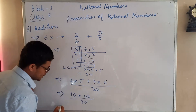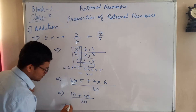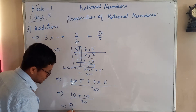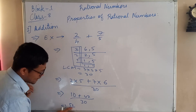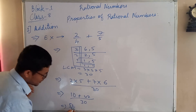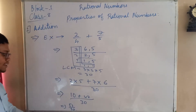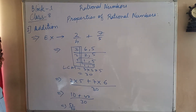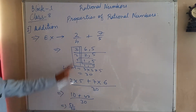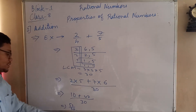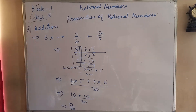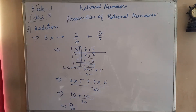So 10 + 42 = 52, divided by 30. Your answer is 52 by 30. You can bring it into its standard form or leave it as it is. So when you add these two rational numbers, the answer should come as 52 by 30.